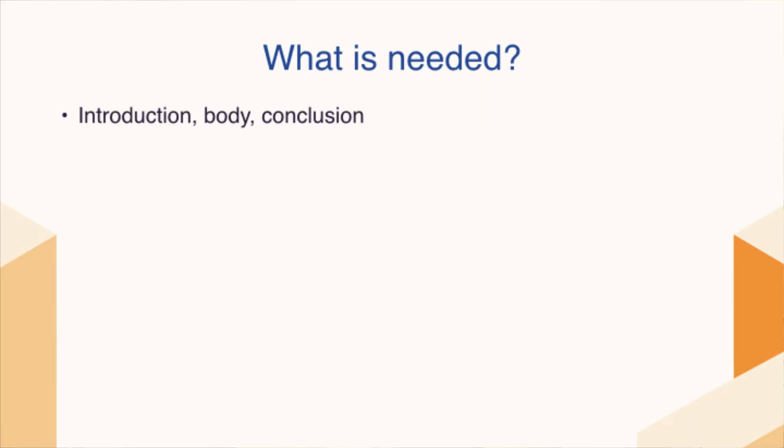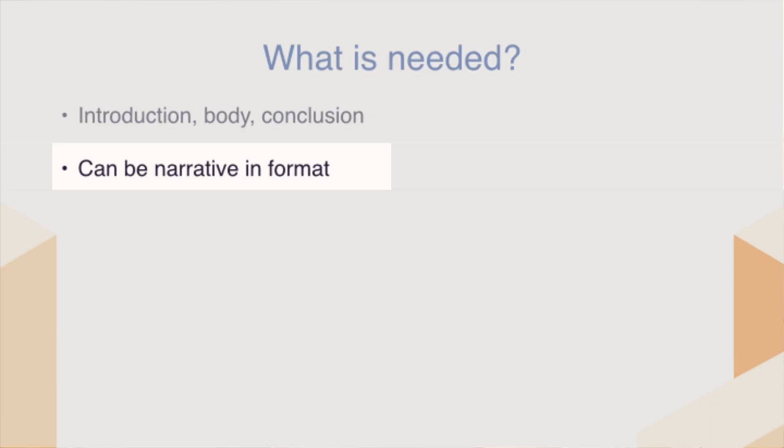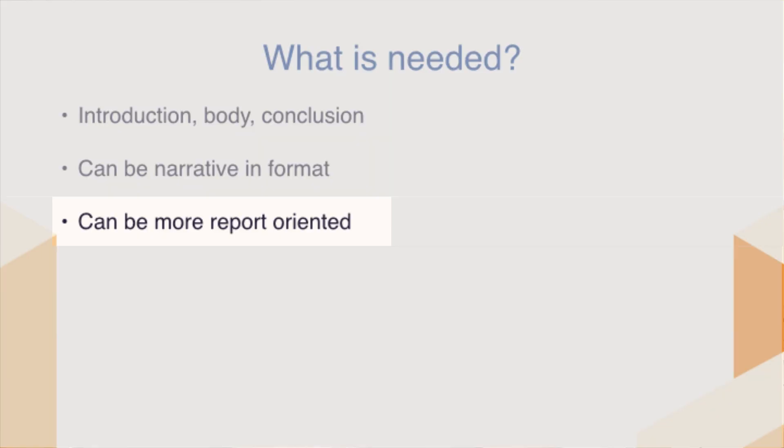So what's needed in a paper? You're going to need your introduction, body, and conclusion — that's pretty straightforward, it is an essay. You can write it in a narrative format, which is a straight flow of paragraphs as if you're explaining something, similar to what you'd do in an English or social studies class. It could also be more report oriented, like a lab you'd do in science class, with sections like introduction, reason, aim, and procedures blocked off.